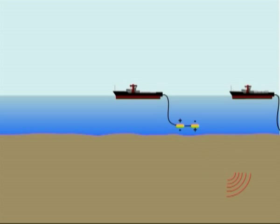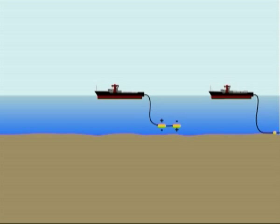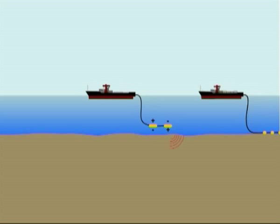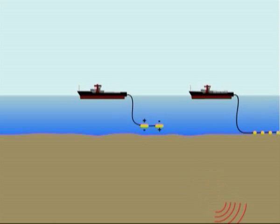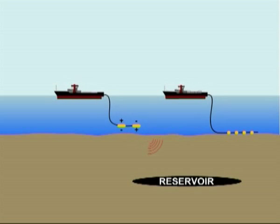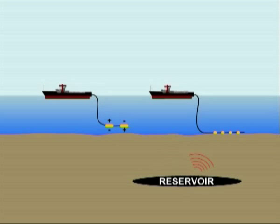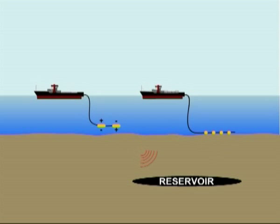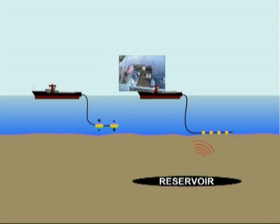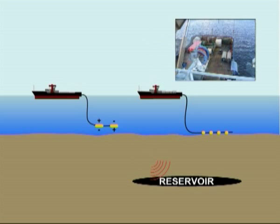MTEM uses an electrical source that emits a series of pulse-coded transient signals into the subsurface. The voltage response between pairs of receiver electrodes along the logging profile is measured to provide a means to detect and characterise hydrocarbon reservoirs in shallow water and on land areas.